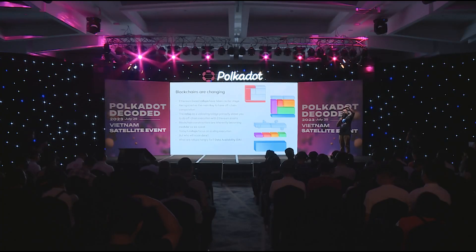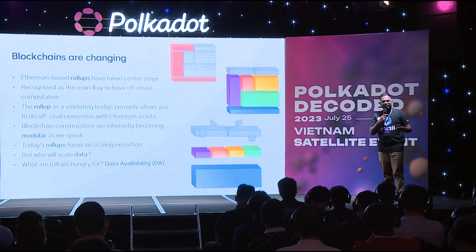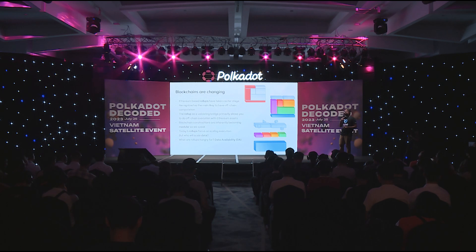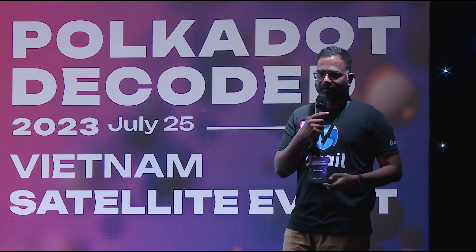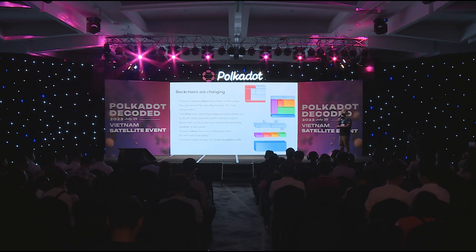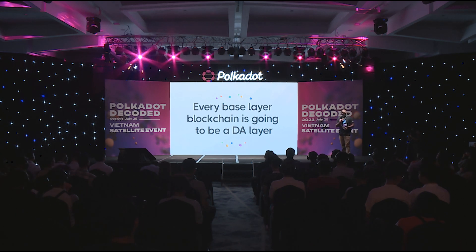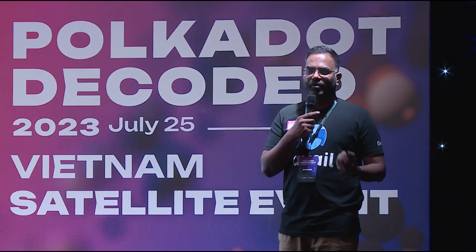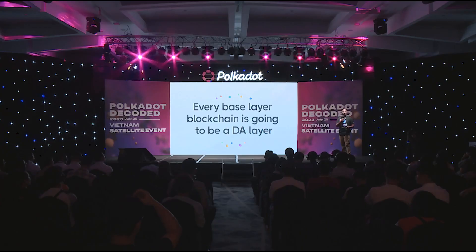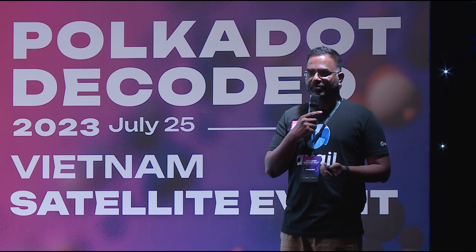Execution is getting demarcated into a separate layer and the base layer is looking at things like data availability. For rollups specifically as an Ethereum scaling solution, they are hungry for data availability. So base layers are really going to focus on data availability going forward — not execution — because rollups focus on the execution part. The bold statement I'm trying to make is that every base layer blockchain going forward is going to be a DA layer, because data availability is going to be scarce. Execution is becoming scalable through zero knowledge, validity proofs, and recursive proofs, but data availability is still something we need to optimize for.